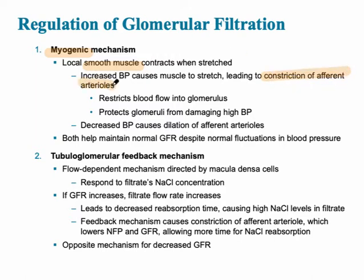This constriction restricts blood flow into the glomerulus, and therefore it protects the glomerulus from damaging high blood pressure, because that blood pressure should never be over around 55-60 millimeters of mercury — otherwise there could be damage to those cells.